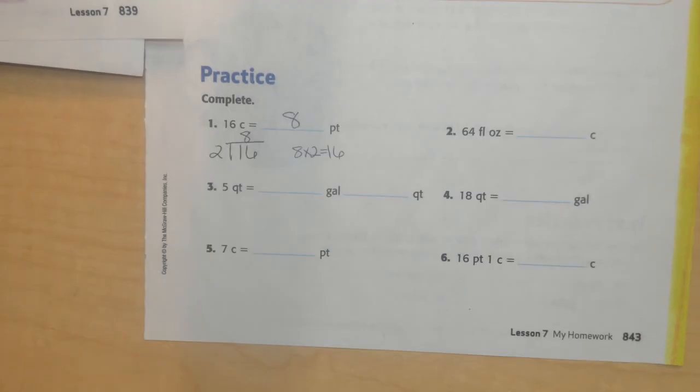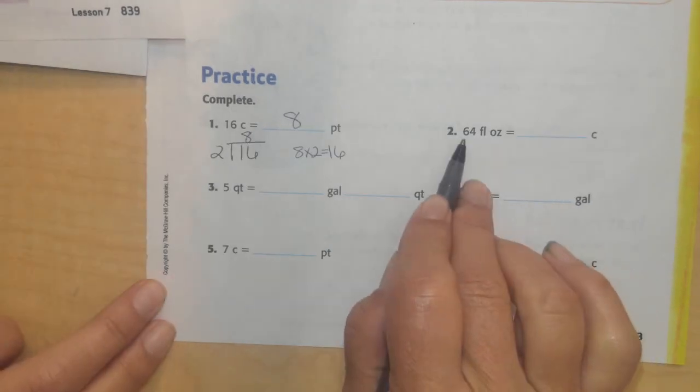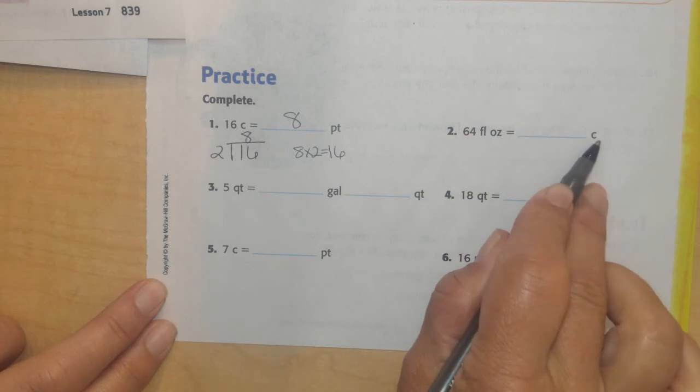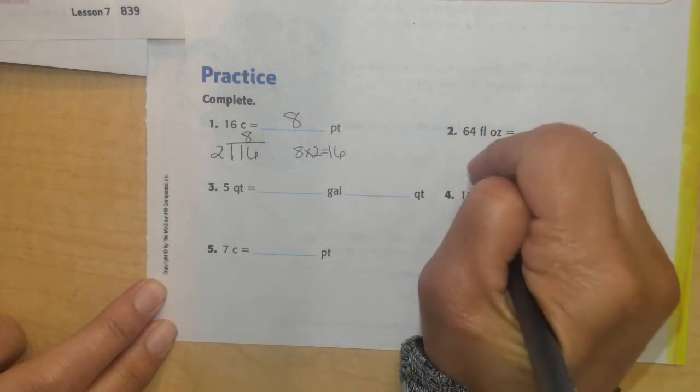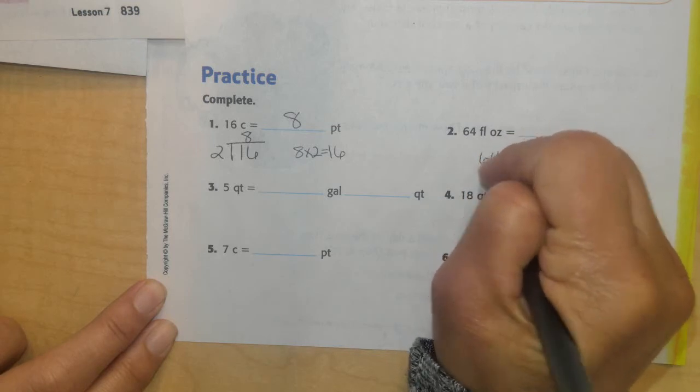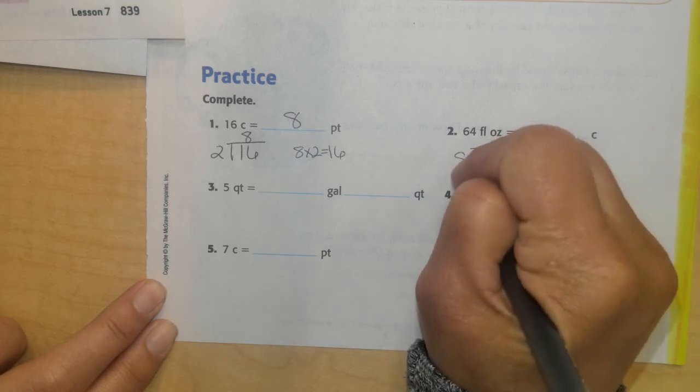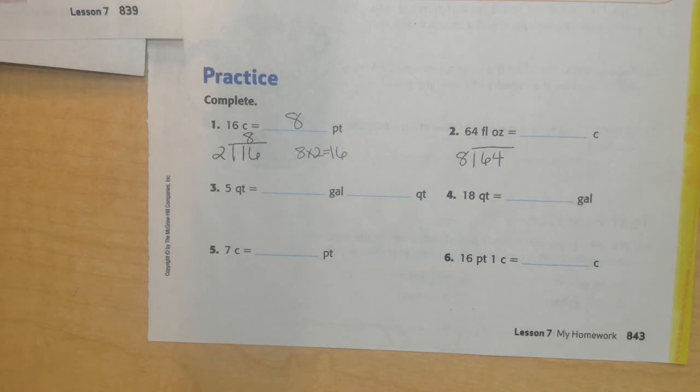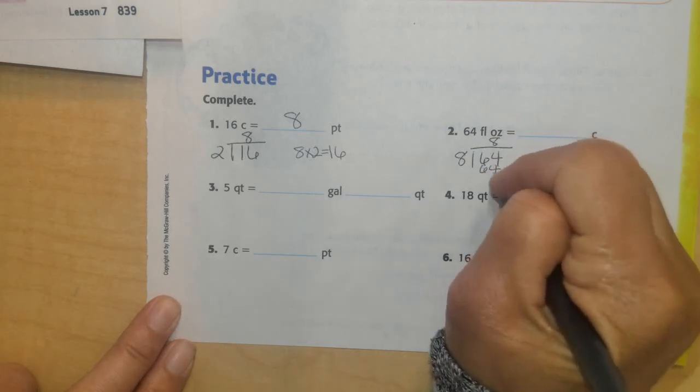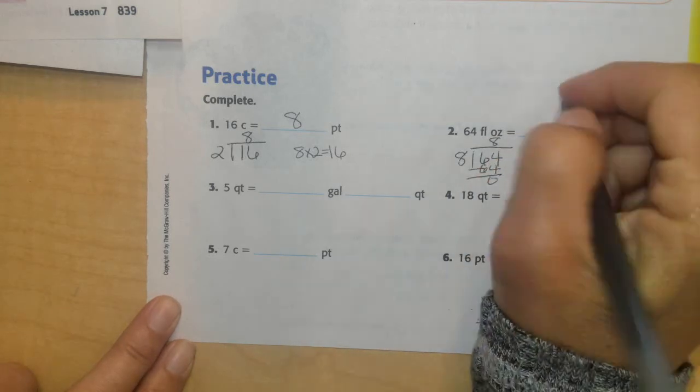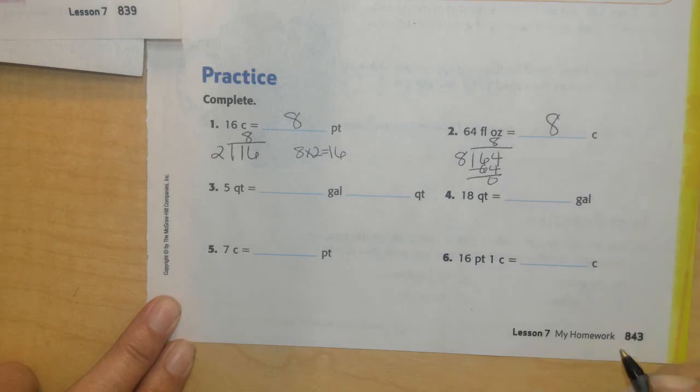All right, next one. If I have 64 ounces, again, I'm going from smaller to bigger. There's 8 ounces in each cup. So I'm going to have my 64, and I'm going to divide it by 8. And I know my doubles, right? I know 8 times 8 is 64. So I'm going to have 8 cups.